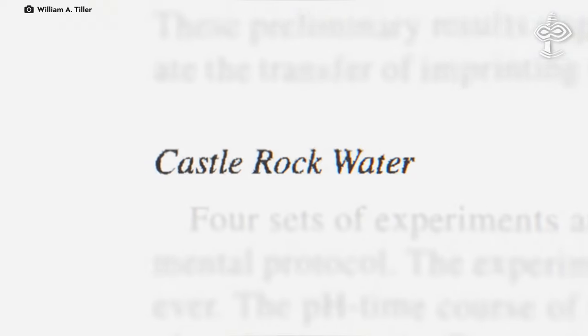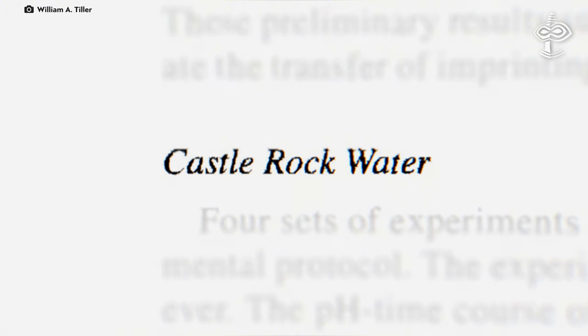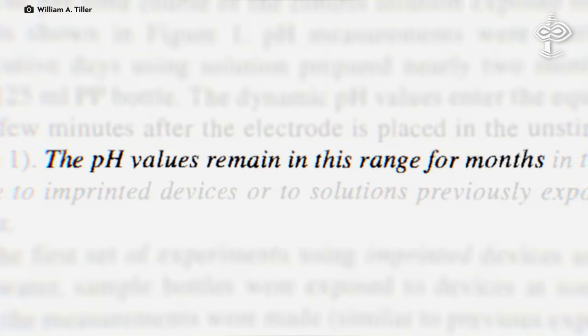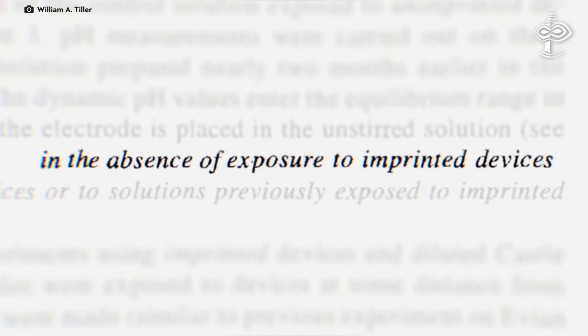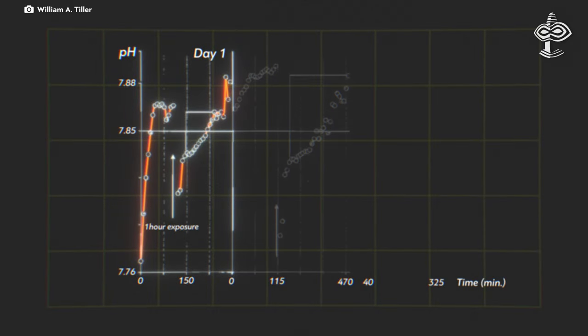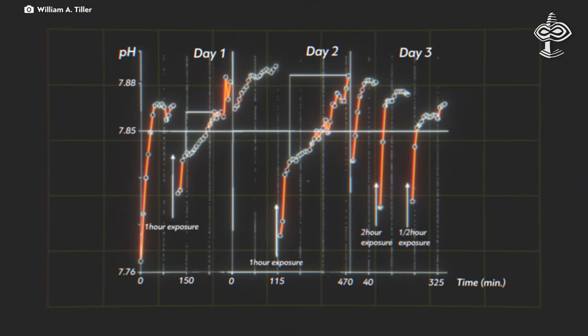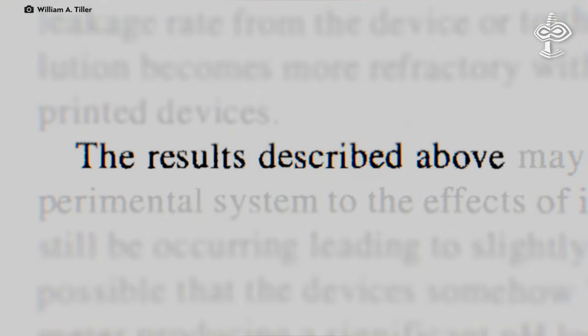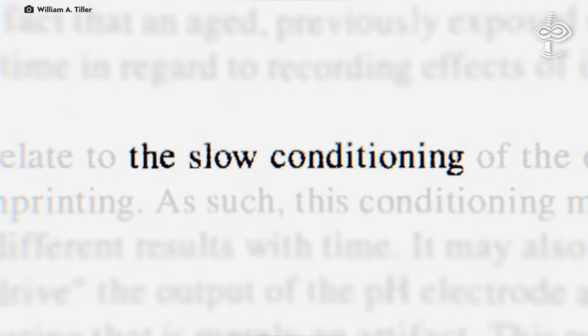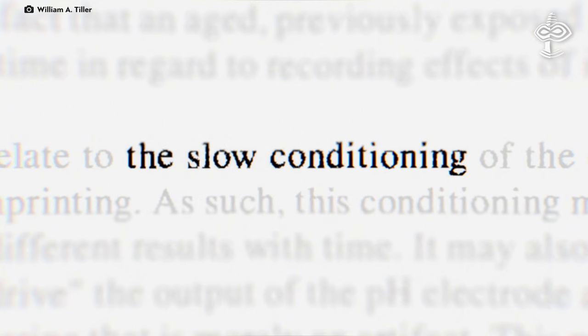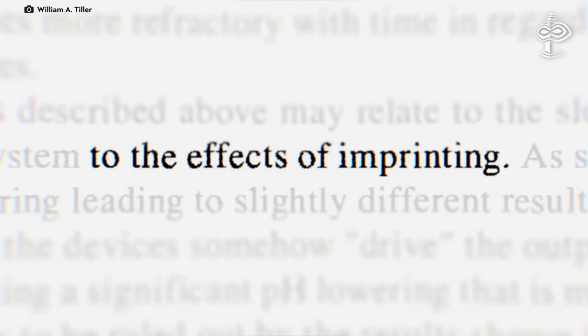Tiller experimentally found and proved another interesting effect, that when intent is repeated in the same space, eventually it becomes permanent. And when that happens, the laws of physics in that particular space no longer operate as they did before. When they kept running the same experiment over and over again, Tiller says the laboratory space began to become conditioned, so that the same result would happen more strongly or more quickly.